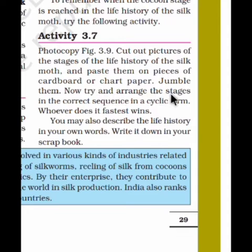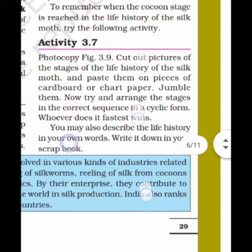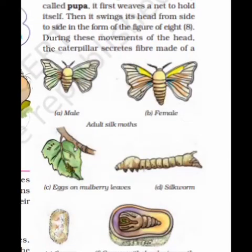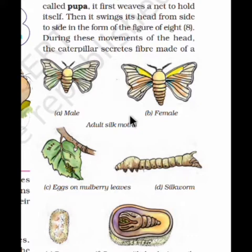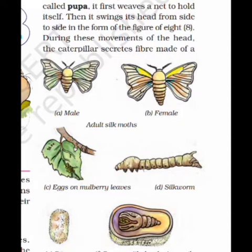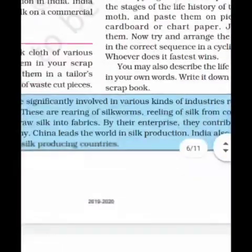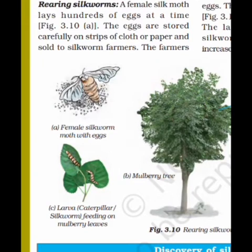Refer to Figure 3.9 and note down the life history of the silk moth in your scrapbook — this is also found in your textbook. In the figure you can see the eggs in dot form, the cocoon, and the cocoon with developing moth. This illustrates the complete life history of the silk moth.